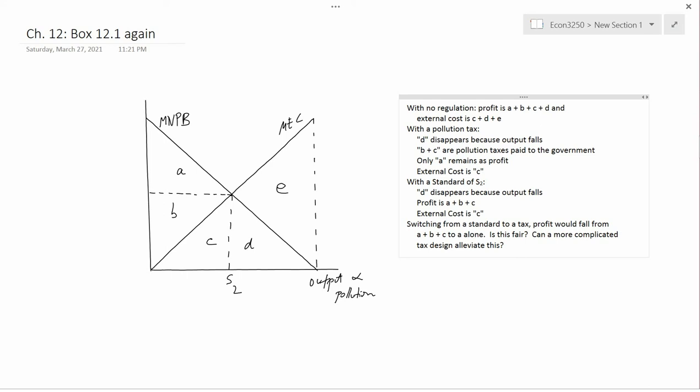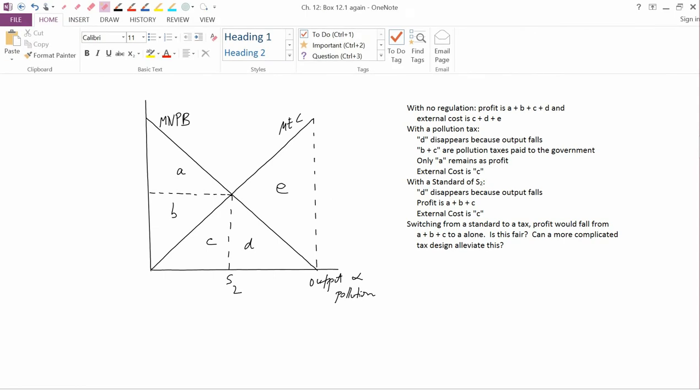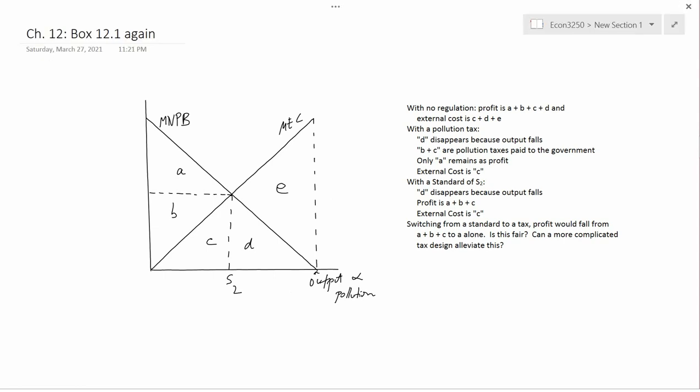I'm going to revisit Box 12.1 in more detail. The horizontal axis is output, which is proportional to pollution. We're forgetting about abatement level here. Q_pi is here. We have marginal external cost, which is upward sloping because the horizontal axis is output. We have MNPB that's downward sloping for the same reason.